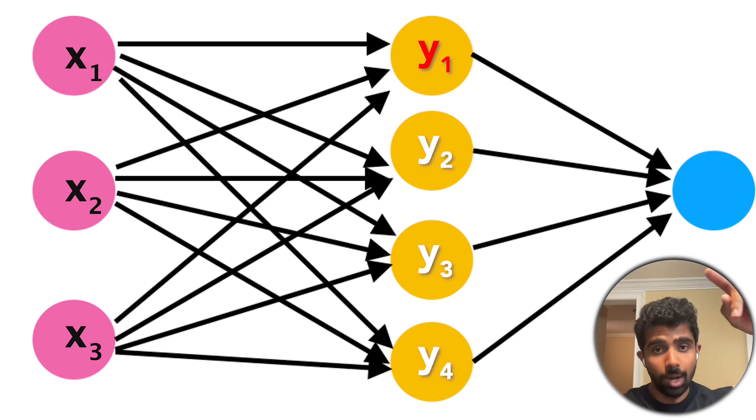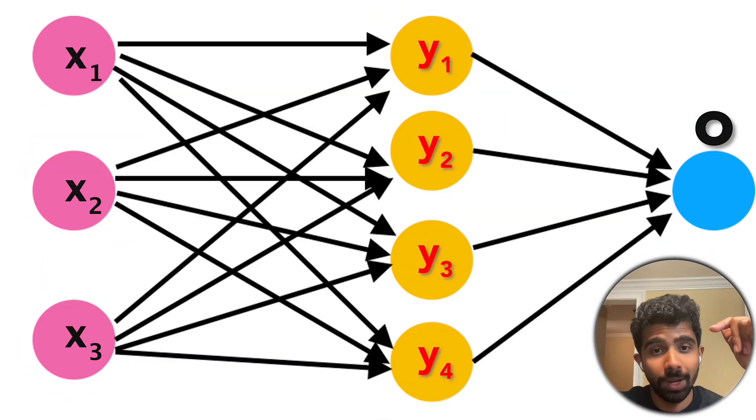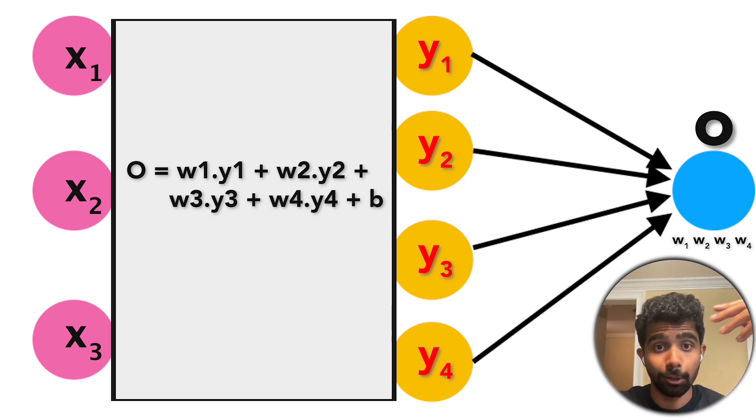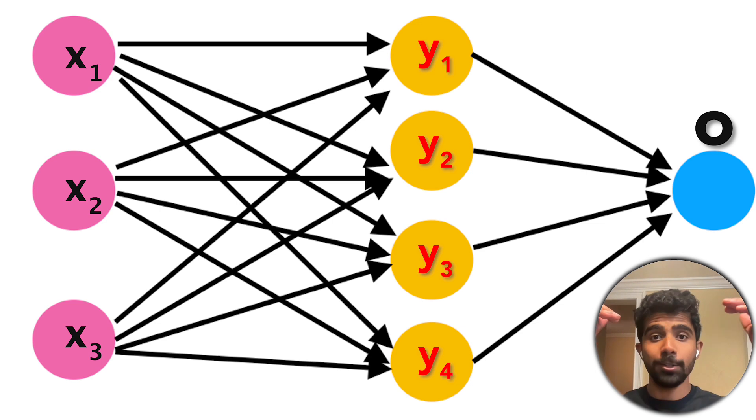But we have four numbers right now, Y1 through Y4, and we need to get one final output number. So this final node is also going to do some more calculation, but it's going to take in four numbers as input. It's going to use this equation, it's going to take in Y1 through Y4, and it's going to learn W1 through W4, as well as another constant term B to predict that final output number. That's the gist of neural networks.